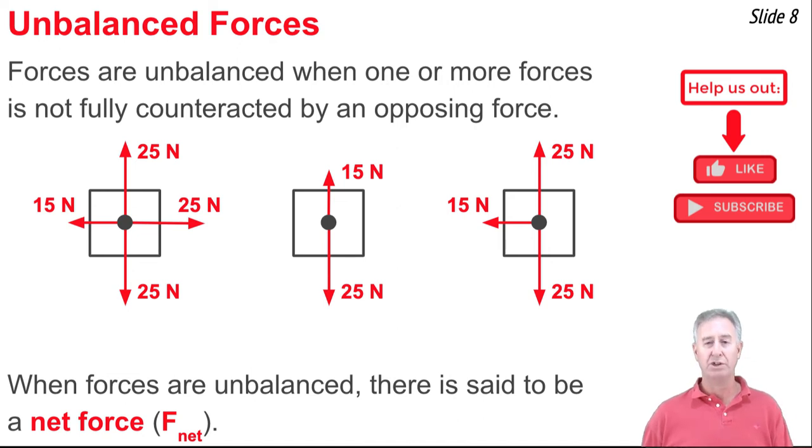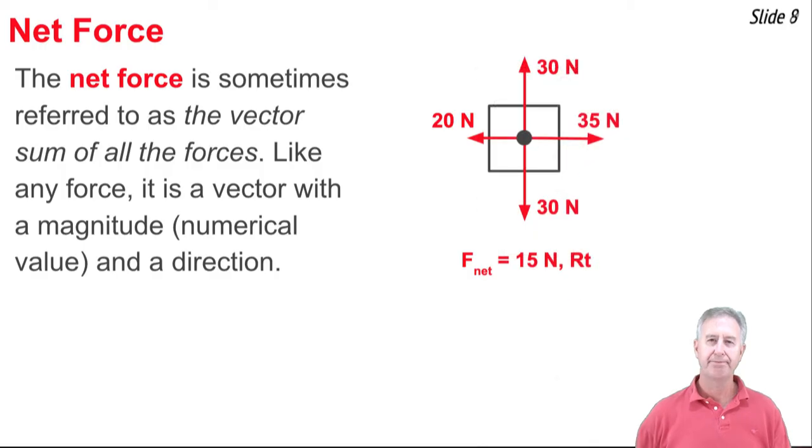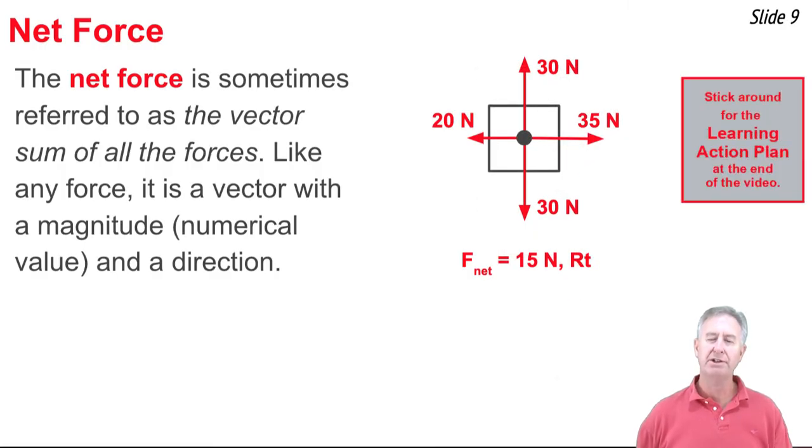Whenever we have these situations with an unbalanced force, we say that there's a net force that is acted upon the object. There's an F net, or unbalanced force, acting on the object. So the net force is the result of adding all the individual forces as vectors. It's sometimes called the vector sum of all the forces.